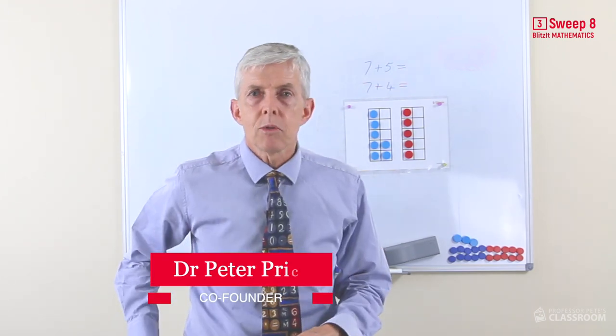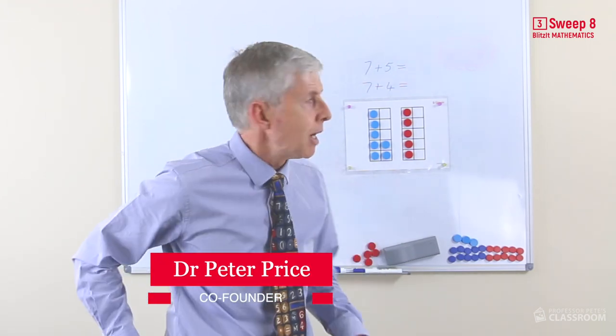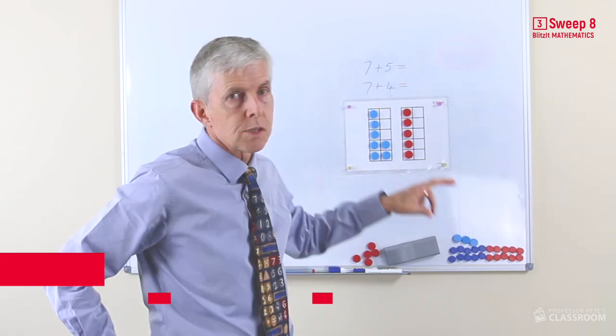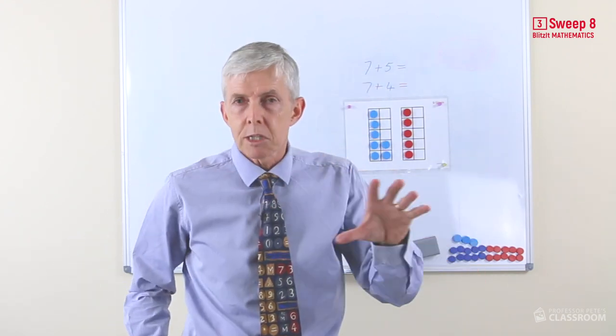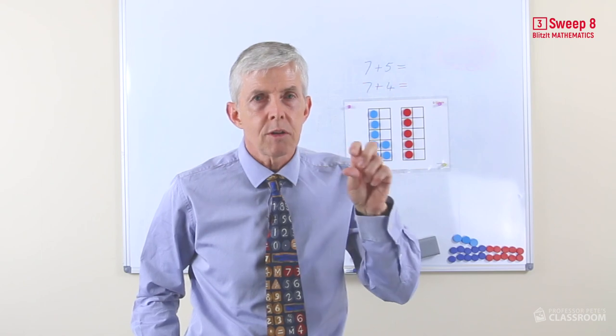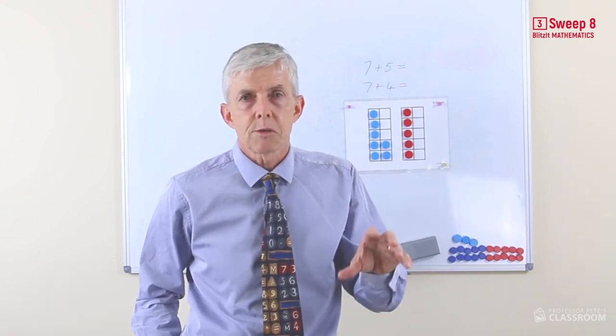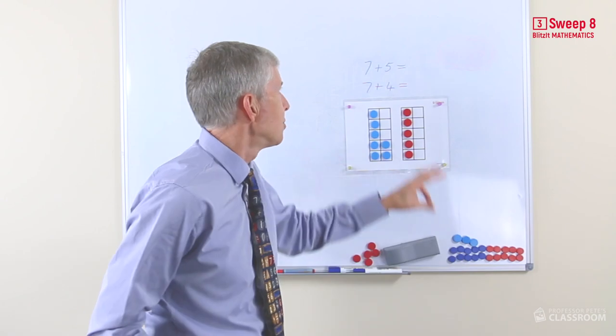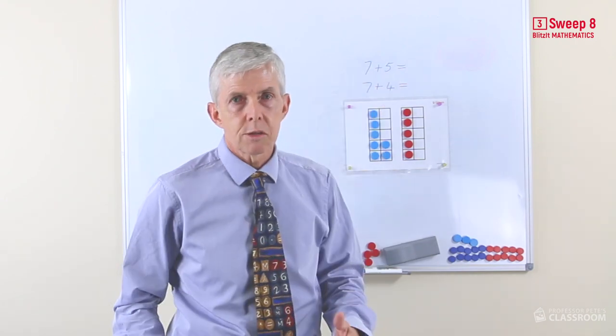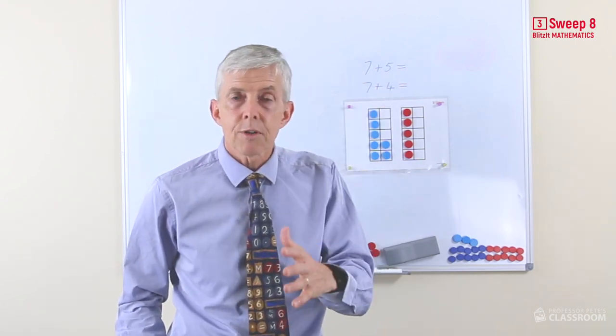And in this sweep we're looking at the two remaining facts, that is seven plus five and seven plus four. The beauty of the strategies approach is that you're left with a very small number of facts when you've used appropriate strategies. So there's just these two left, including the turnarounds of course. So this won't take very long.